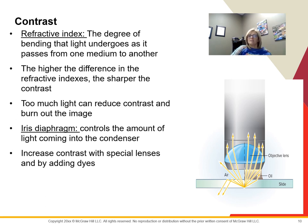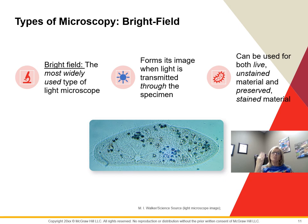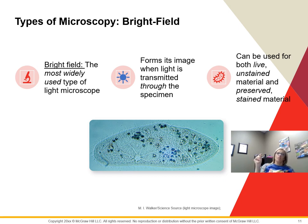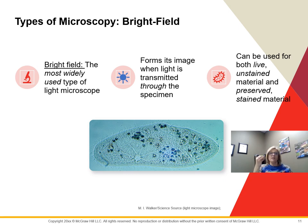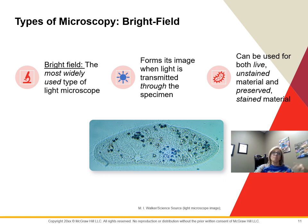We can increase contrast by using dyes, or by using a phase contrast microscope — but since we don't have those, we use dyes. The most widely used type of light microscope is the bright field, which forms an image when light is transmitted through the specimen. The specimen is denser and absorbs light while the rest is transmitted through the ocular. We use this for live specimens, unstained specimens, preserved specimens, and stained specimens — it has a very broad application.